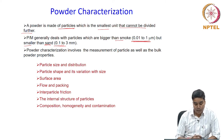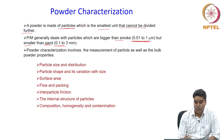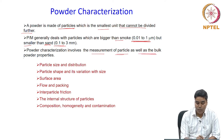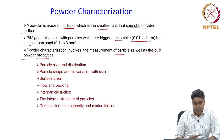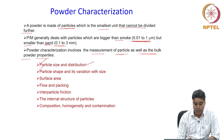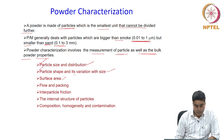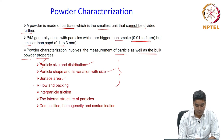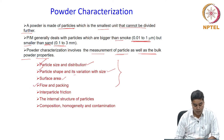The characterization process for powder will involve measurement of both particles and some bulk powder properties. Particle characteristics include particle size and size distribution, particle shape and its variation with size, and surface area of the particles. Some powder properties like flow and packing characteristics of the powder as a whole also have to be evaluated, including inter-particle friction which affects the compaction process.